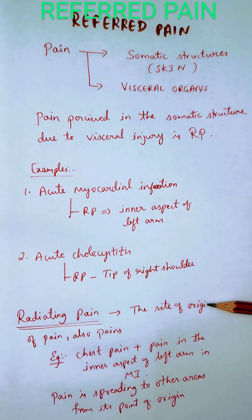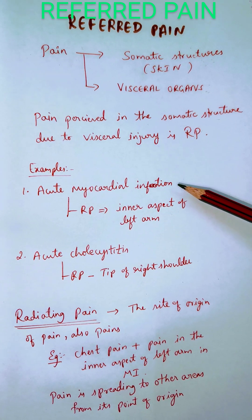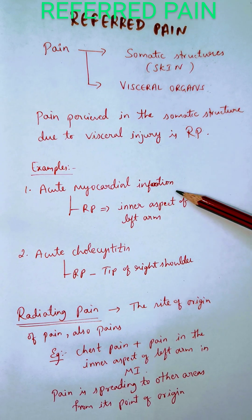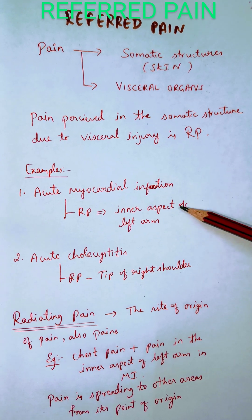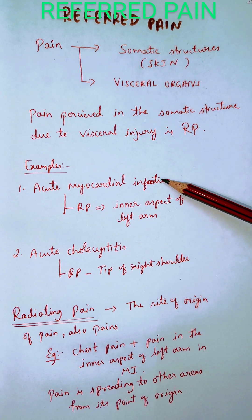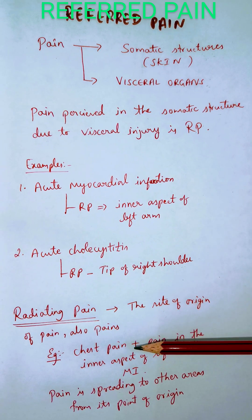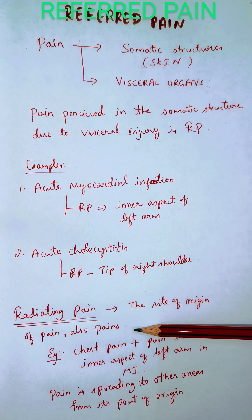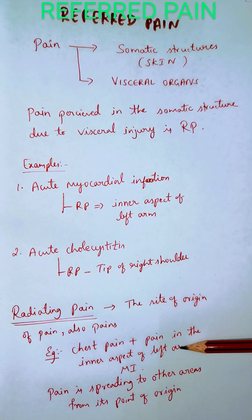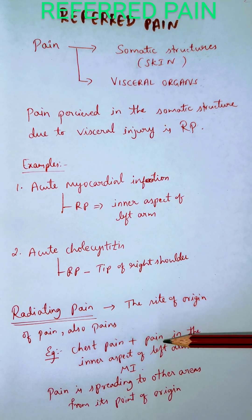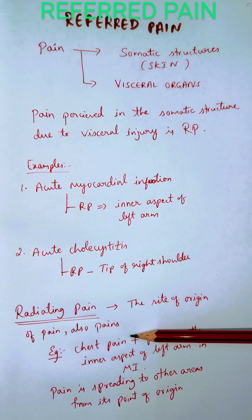There is another term called radiating pain, which should not be confused with referred pain. Radiating pain means the site of origin of the pain also hurts. For example, in acute MI with referred pain, the pain is initially felt in the inner aspect of the left arm. But for radiating pain, the patient will feel chest pain and at the same time pain is also felt in the inner aspect of the left arm.